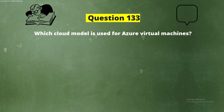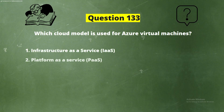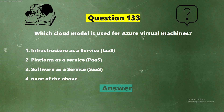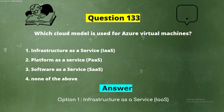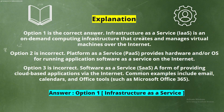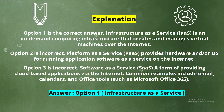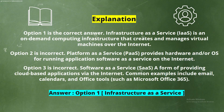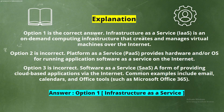Question 133. Which cloud model is used for Azure virtual machines? The options are: Option 1, Infrastructure as a service; Option 2, Platform as a service; Option 3, Software as a service; Option 4, None of the above. The correct answer is Option 1, Infrastructure as a service. IaaS is an on-demand computing infrastructure that creates and manages virtual machines over the internet. Option 2 is incorrect — PaaS provides hardware and OS for running application software. Option 3 is incorrect — SaaS is a form of providing cloud-based applications via the internet; common examples include email, calendars, and office tools such as Microsoft Office 365.